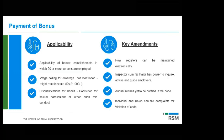For payment of bonus, applicability is to establishments where 20 or more people are employed. The current ceiling of 21,000 threshold has not been changed in the code — it may be revised in the rules. Disqualification from bonus is possible if there is any misconduct by the employee. Records and registers can now be maintained electronically under all the codes — manual records are not compulsory.